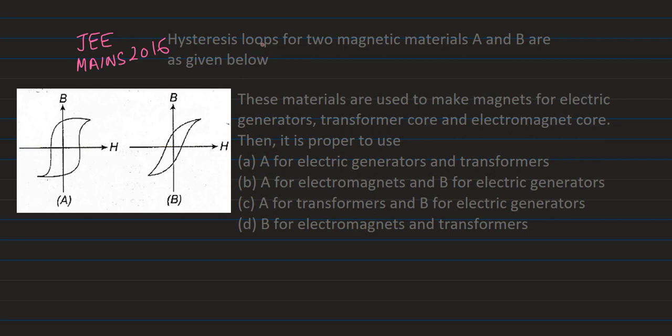This hysteresis loop is related, so here we have a BH curve that is figure A and that is figure B. Basically this is BH, this is BH, but this is figure A and this is figure B. These materials are used to make magnets for electric generators, transformer cores, and electromagnet cores.